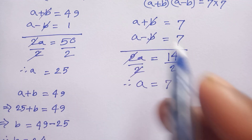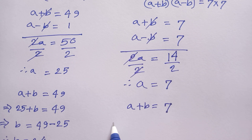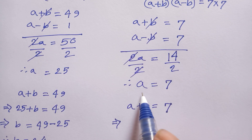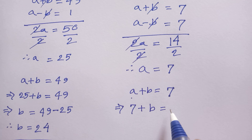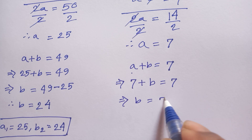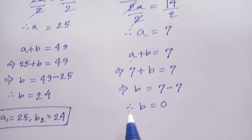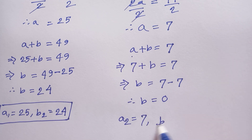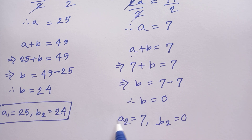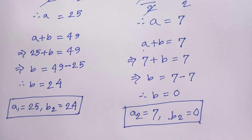We put the value of a into the first equation: a plus b equals 7, and since a equals 7, we get 7 plus b equals 7, so b equals 7 minus 7, therefore b equals 0. So when a₂ equals 7, then b₂ equals 0. This is the other solution. Thanks for watching, please subscribe to my channel for more videos, bye bye.